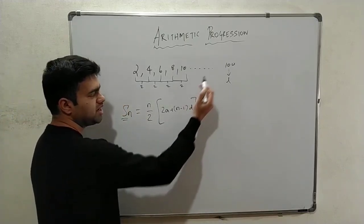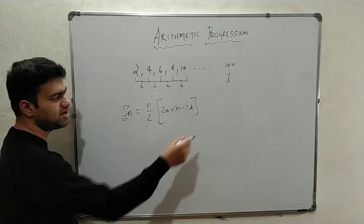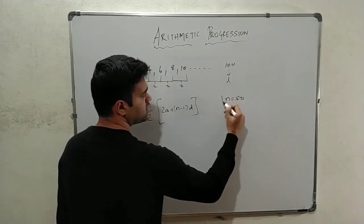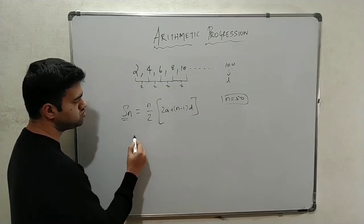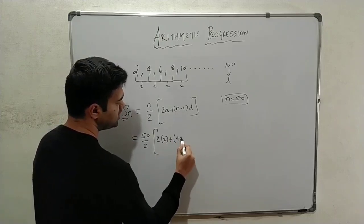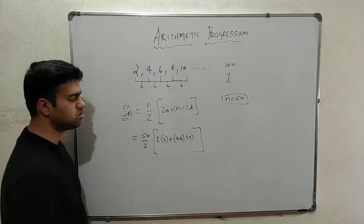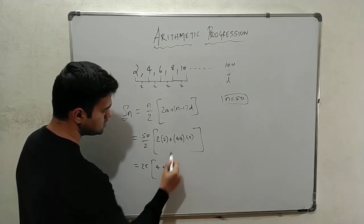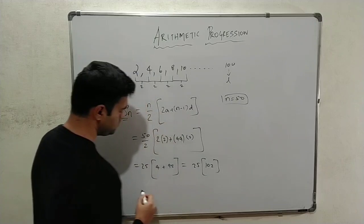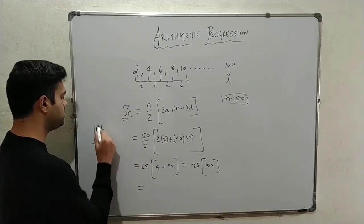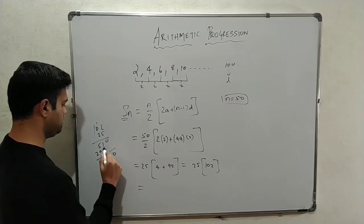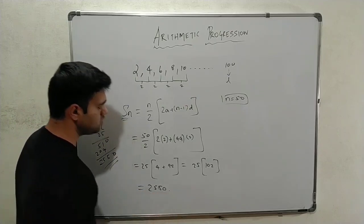We know the number of terms n equals 50. Applying the summation formula with first term a equals 2, last term 100, and n equals 50: that gives us 50 divided by 2 into (2 plus 100), which is 25 into 102, equals 2550. So the sum of the even number series from 2 to 100 is 2550.